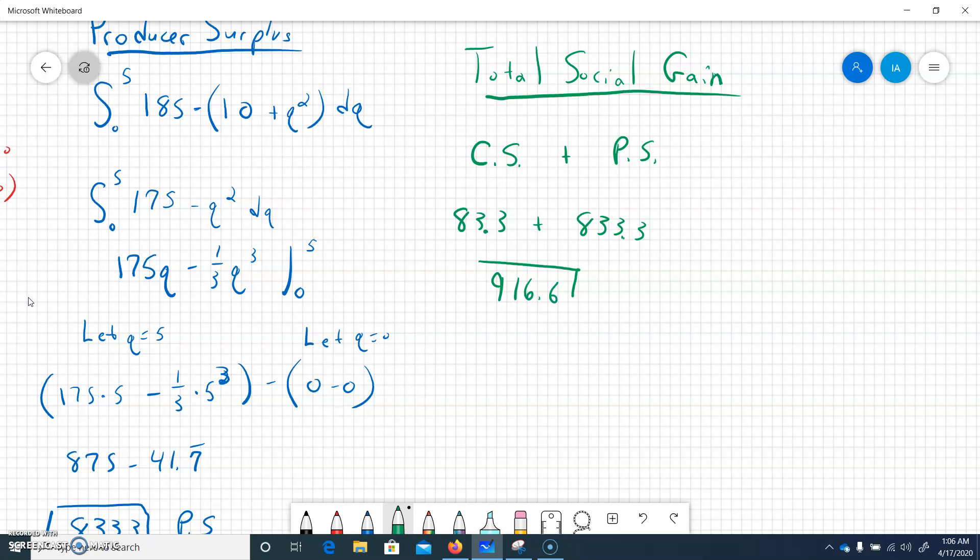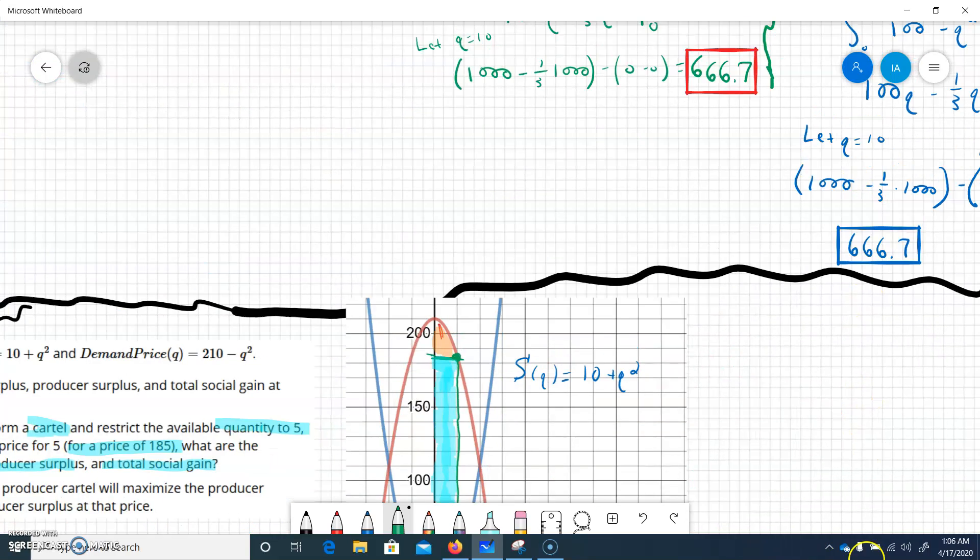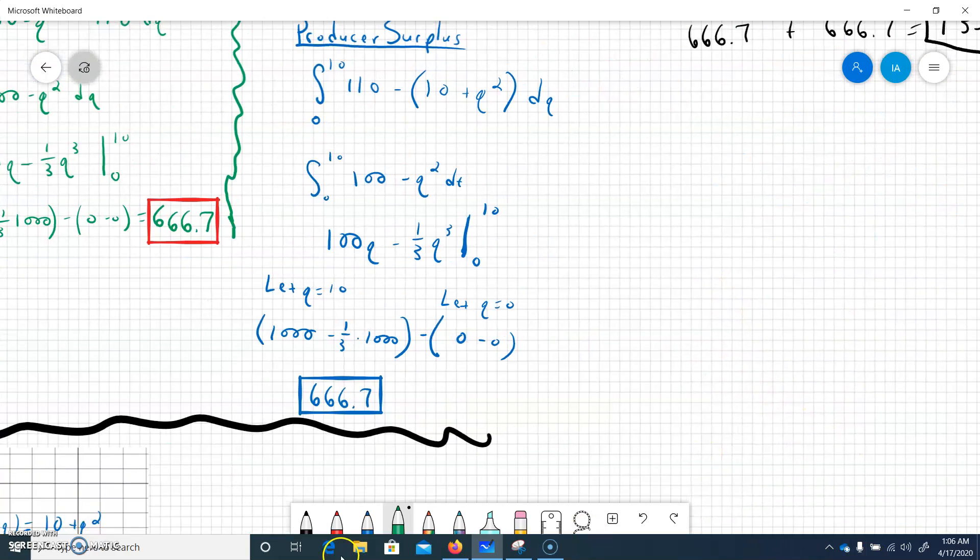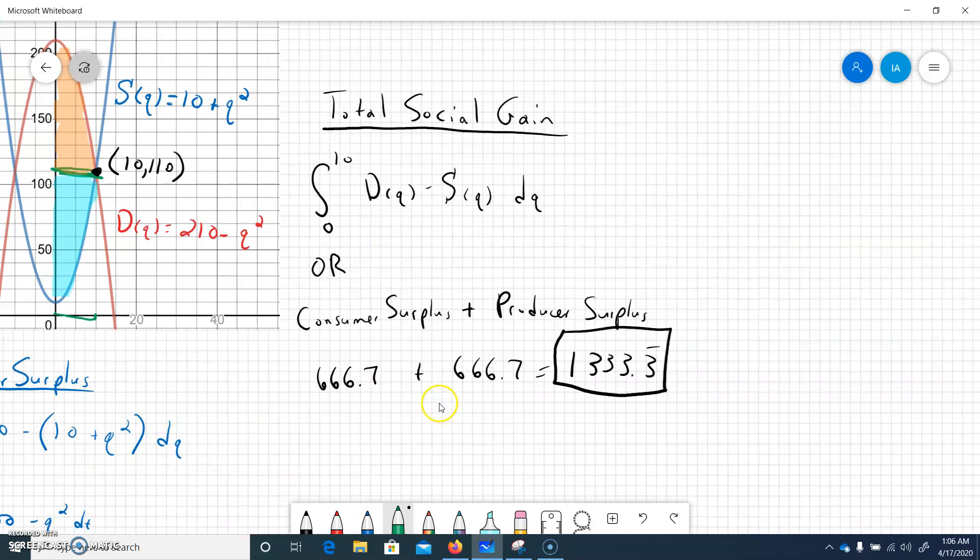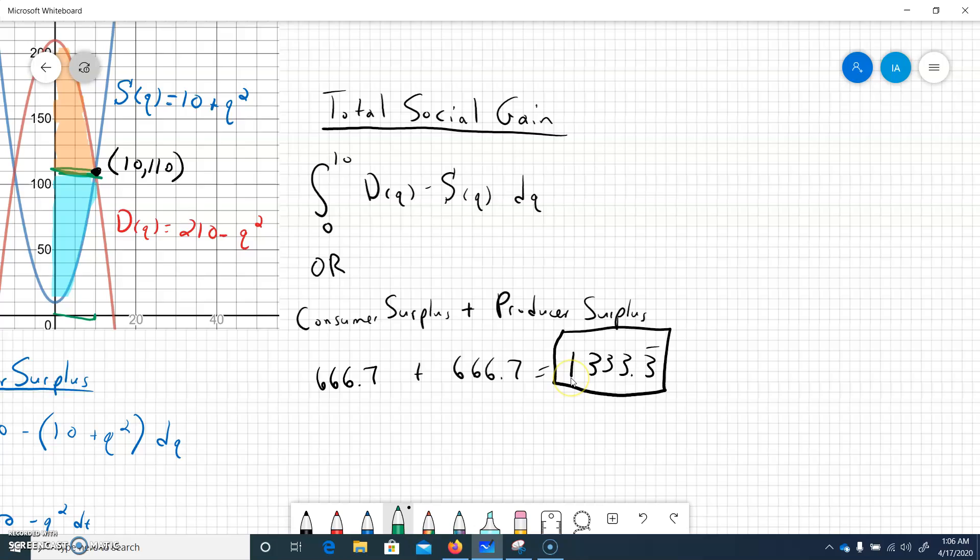So that's the total social gain, which if you go back to the previous video, we could compare that to where we had the equilibrium point, and we got that the total social gain was 1333.3, which at the equilibrium point would be the maximum social gain.